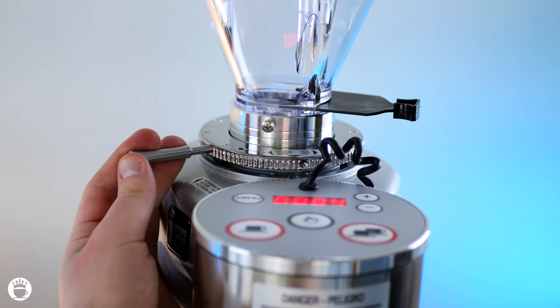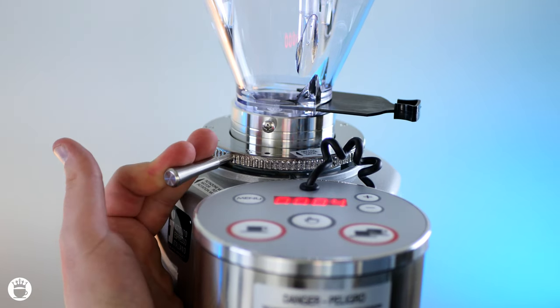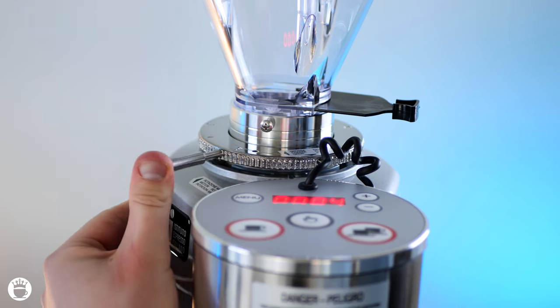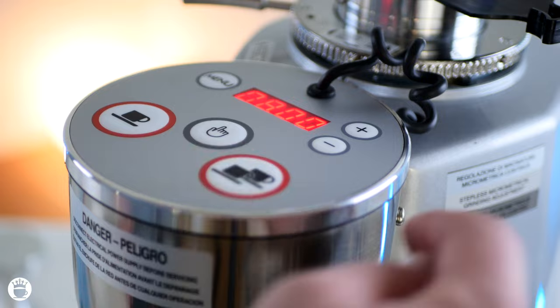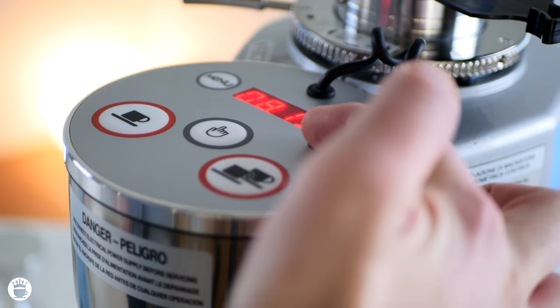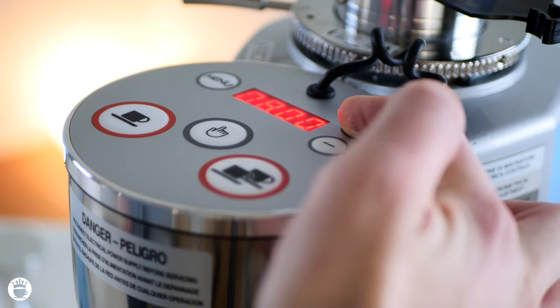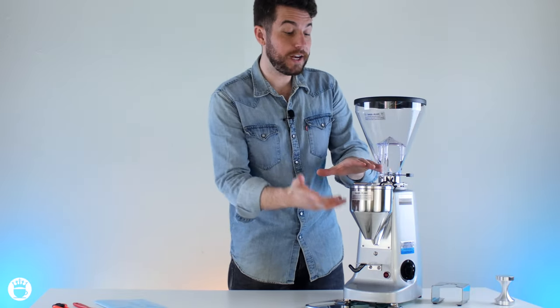You also have that stepless micrometric adjustment, which is really nice for being able to fine tune your espresso and really get down to some fine grinding. The provided doses on this machine are fully programmable so you can program in a time for a single or a double. This is an on-demand grinder so there won't be any buildup in this chamber here, and it provides a very consistent dose each time.